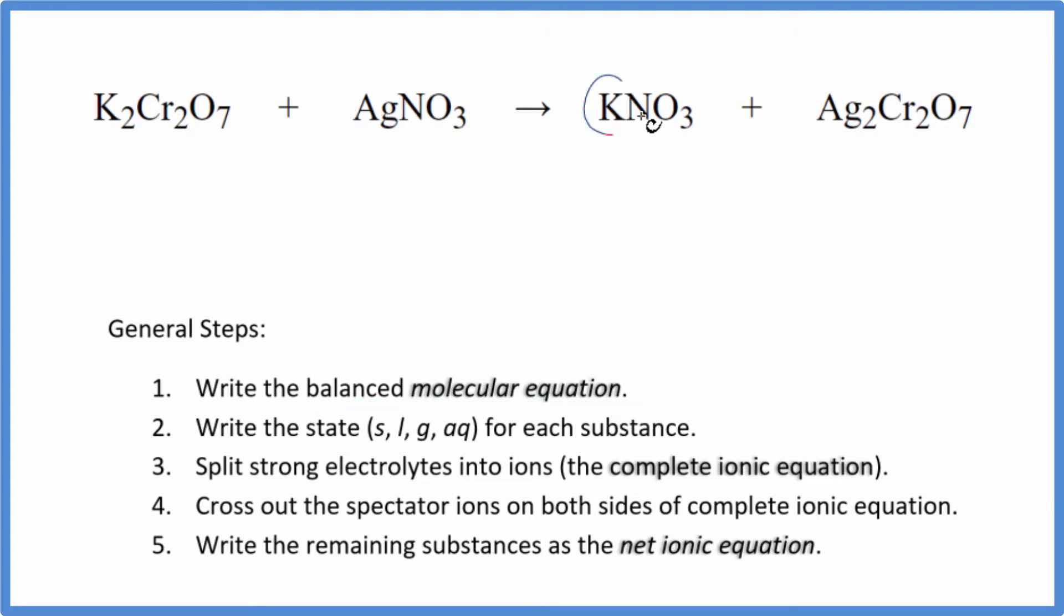I can see I have one potassium here and two here. Put a coefficient of two. Now I have two nitrates and only one here, so I'll put a two in front of the AgNO3. That balances our nitrates, two silvers, and then we have two silvers here. This is the balanced molecular equation.